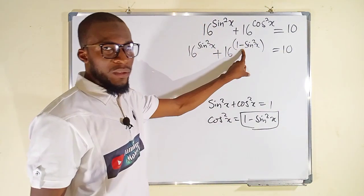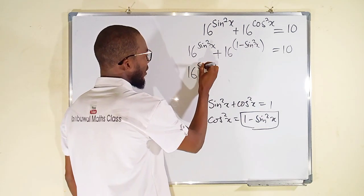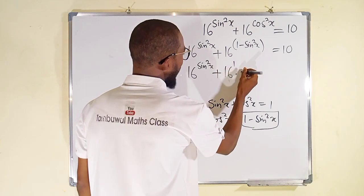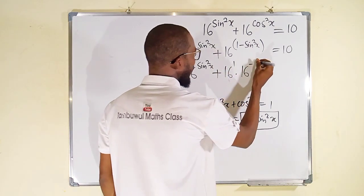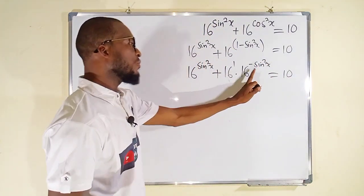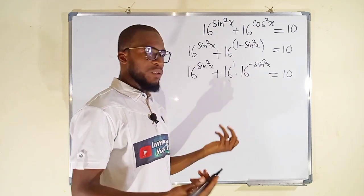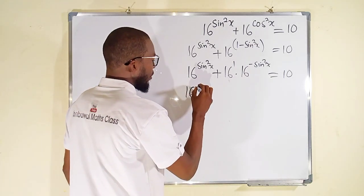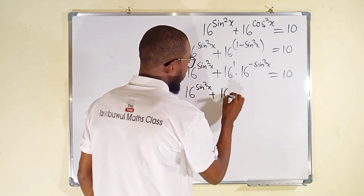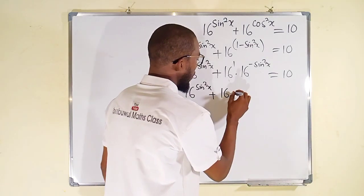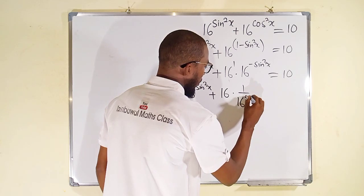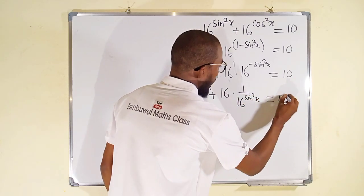From laws of indices, we can separate this. We have 16 raised to the power of sine squared x plus 16 raised to the power of 1, multiplied by 16 raised to the power of negative sine squared x, and to the right we have 10. To get rid of this negative sine, we can take the reciprocal. So this becomes 16 raised to the power of sine squared x plus 16 — because 16 to the power of 1 is still 16 — multiplied by 1 divided by 16 raised to the power of sine squared x, and to the right we have 10.